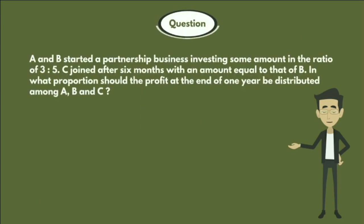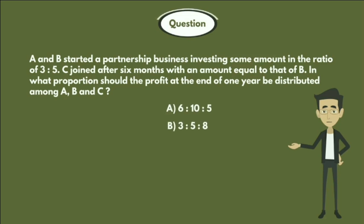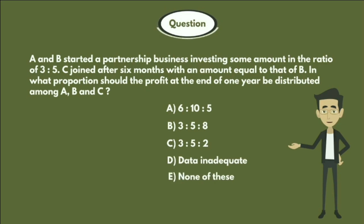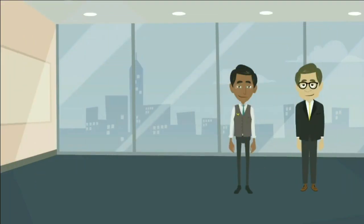A and B started a partnership business investing some amount in the ratio of 3 to 5. C joins after six months with an amount equal to that of B. In what proportion should the profit at the end of one year be distributed among A, B, and C? Options: A) 6:10:5, B) 3:5:8, C) 3:5:2, D) Data inadequate, E) None of these.